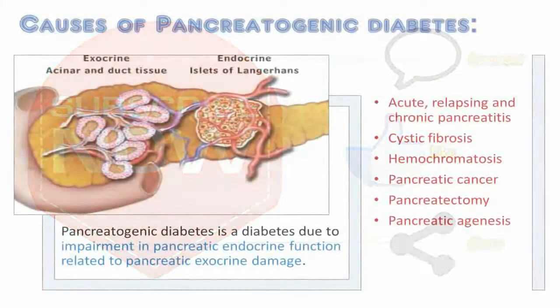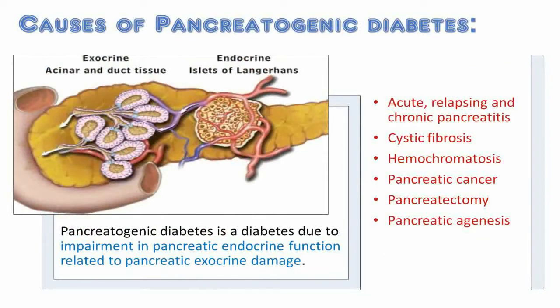Pancreatogenic diabetes is classified by the American Diabetes Association and by the World Health Organization as type 3c diabetes mellitus. It is a diabetes due to impairment in pancreatic endocrine function related to pancreatic exocrine damage.